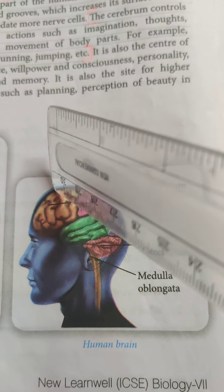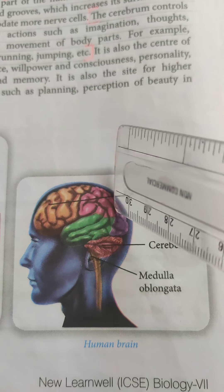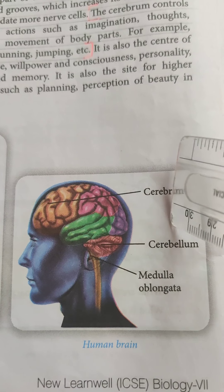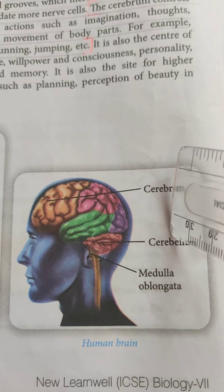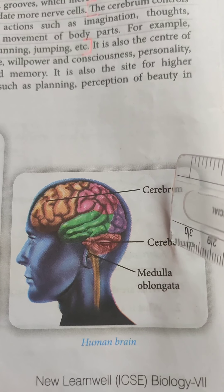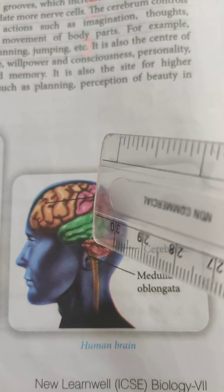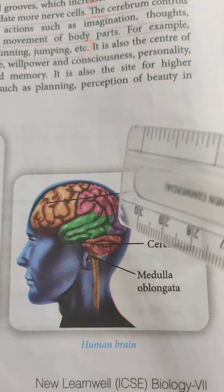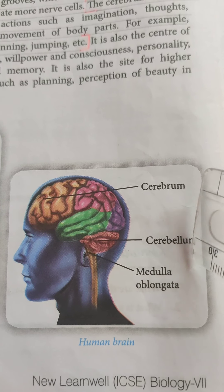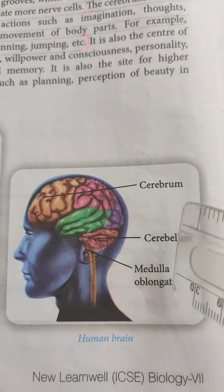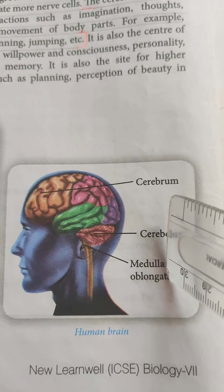The brain is situated inside the skull and it is the control center of the nervous system. The three main parts of the brain are cerebrum, cerebellum, and medulla oblongata.